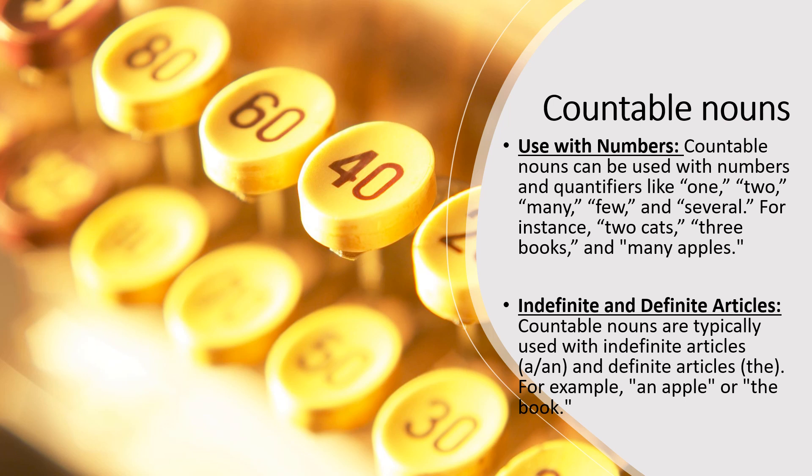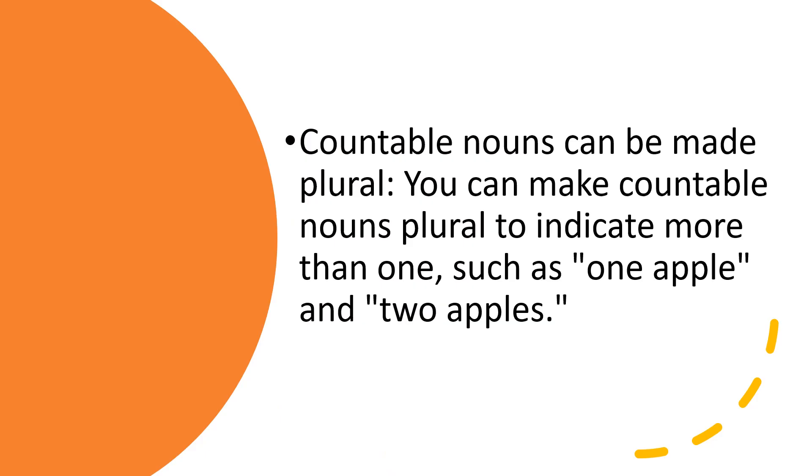Countable nouns are typically used with indefinite articles and the definite articles. For example, an apple, the book. Countable nouns can be made plural. You can make countable nouns plural to indicate more than one, such as one apple and two apples.